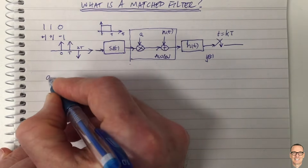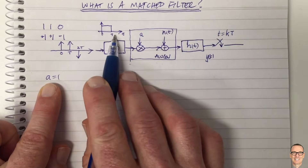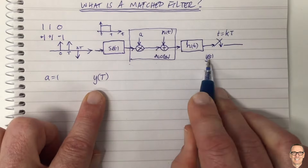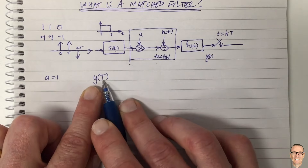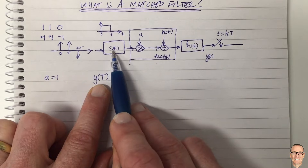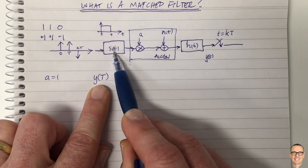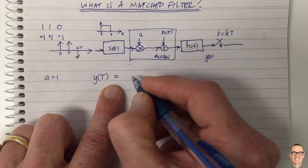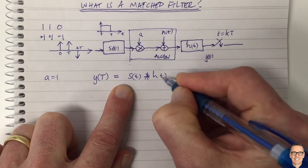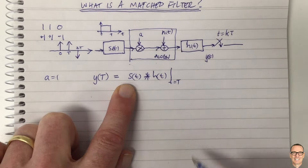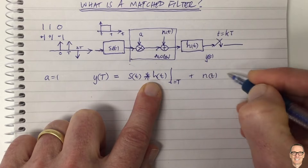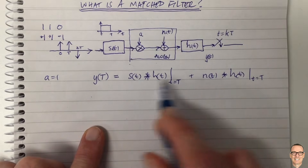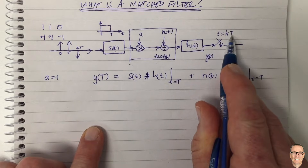Let's consider when the gain equals 1, and just consider the first time slot between zero and T where we have a positive signal coming. In this case, Y(T) sampled at k equals 1 — so we're sampling at time T — is going to equal: S(t) has come from the positive impulse convolved with S(t), gone into the channel multiplied by the gain of 1, added noise, and come through this filter. So it equals S(t) convolved with H(t), evaluated at t equals T, plus the noise component N(t) convolved with the receive filter, evaluated at t equals T.